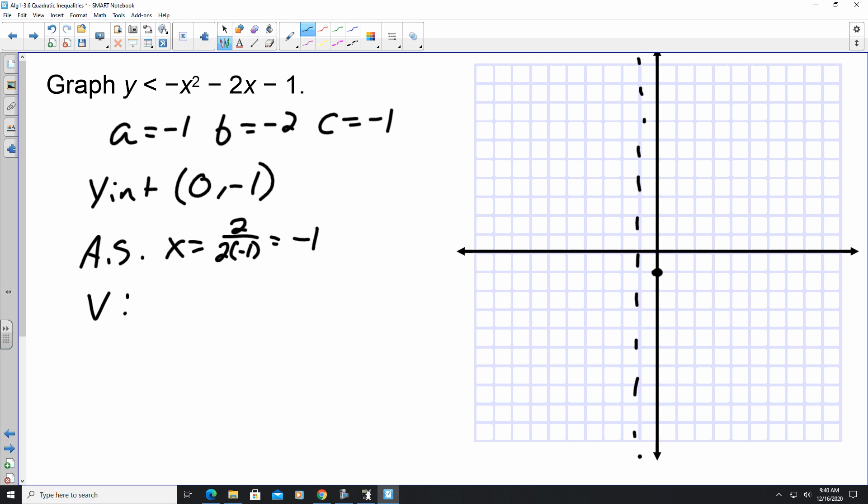My vertex comes from the x value from the axis of symmetry. To find y we plug this into the original value. So negative 1 squared is 1, but because it's negative, we've got negative 1. This is going to be plus 2 minus 1. So when I add all these up, I get 0.